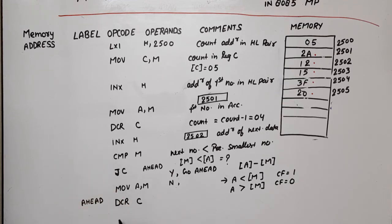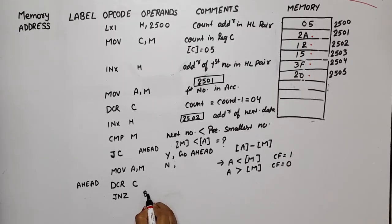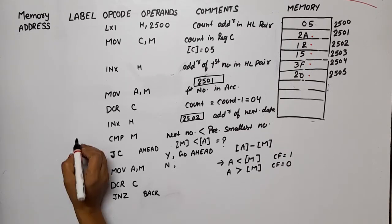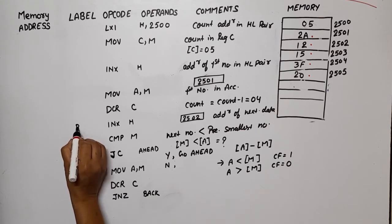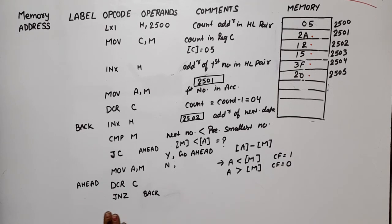We write JNZ BACK - you can also write NEXT_BYTE. I define BACK here, which means I have to go back to the next number. If count becomes zero, then the content in the accumulator is the smallest.